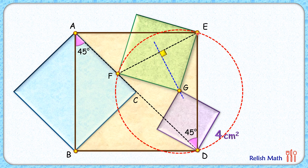FE as a chord is subtending a 45 degree angle at the circumference, so it will subtend an angle of 90 degrees at the center. We need to find a point on this blue line where chord FE subtends a 90 degree angle — that point is point G, and thus G is the center of this red circle. Since G is the center, FG, EG, and GD are all radii.